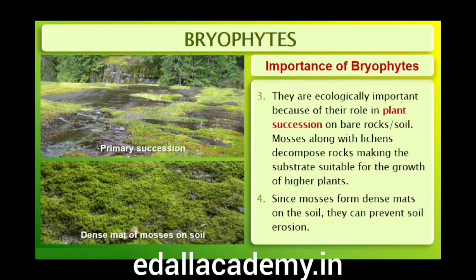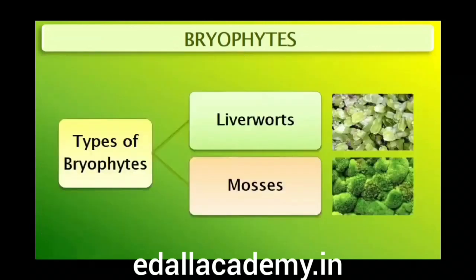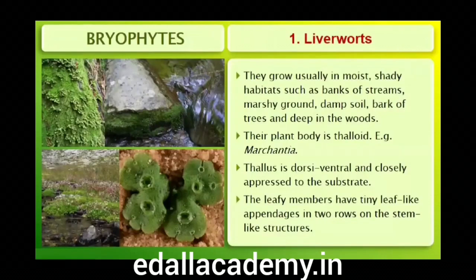Mosses along with lichens are the first organisms to colonize rocks, and hence are of great ecological importance. They decompose rocks, making the substrate suitable for the growth of higher plants. Since mosses form dense mats on the soil, they reduce the impact of falling rain and prevent soil erosion. Bryophytes are divided into liverworts and mosses.